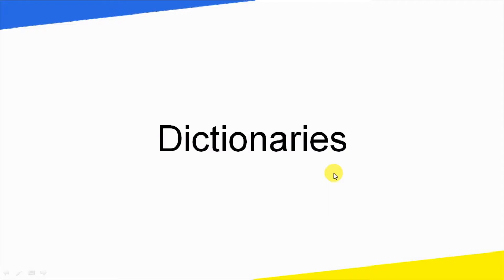What is mutable? We can change the values. If you can change the values, it is mutable. If you cannot change the values, it is immutable. List and dictionary are mutable.